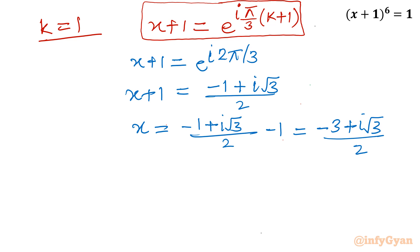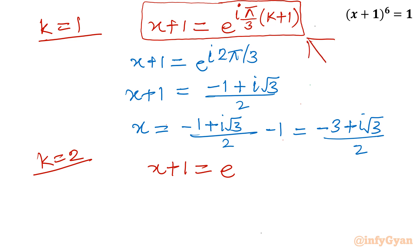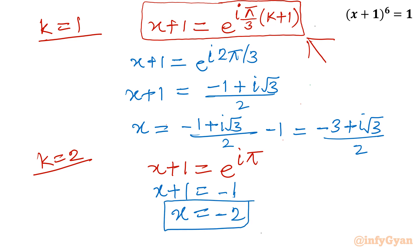For k equal to 2: x plus 1 equals e raised to i pi, since the 3s cancel. This equals minus 1. Taking away 1 from both sides, x equals minus 2. So one solution is real: minus 2.